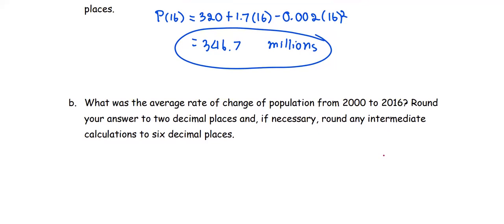In Part B, we are going to compute the average rate of change of the population from the year 2000 to 2016, which means we are going to find the population at t=0 and the population at t=16, and put them together in the formula for the average rate of change,